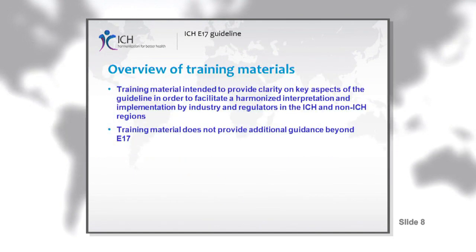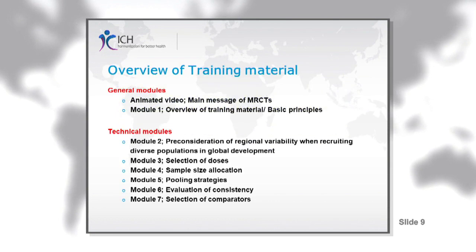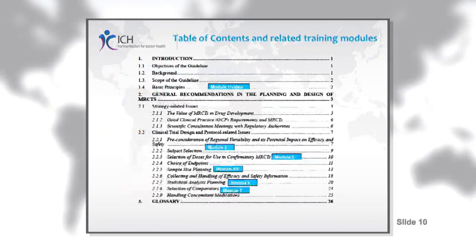We hope you found this introduction to the basic principles helpful. You may now wish to review the other training modules. This material is intended to provide clarity on some of the key aspects of the guideline, but it will not introduce any new concepts or additional guidance to what is currently in the E-17 guideline. The training material is divided into modules. The first two modules aim at providing a general overview of the main messages and basic principles of the E-17 guideline, while modules two through seven are focused on specific sections and provide a more in-depth explanation. In the technical modules, you will also find written notes that will further explain and expand on important issues. This slide shows the table of contents of the E-17 guideline and in which module of the training material you can find specific topics addressed.